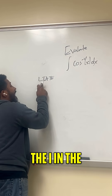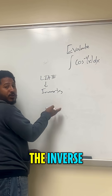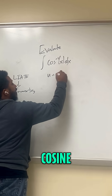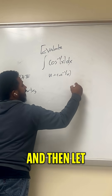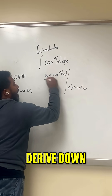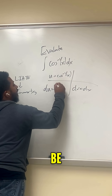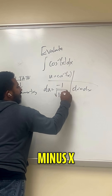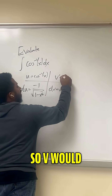We consider LIATE, and we know that the 'I' in LIATE stands for the inverse trig. Let u be the cosine inverse of x, and then let dv be the rest, so dv equals dx. Then we derive down, integrate up. So du would be negative 1 over the square root of 1 minus x squared, and then integrating up, v would just be x.